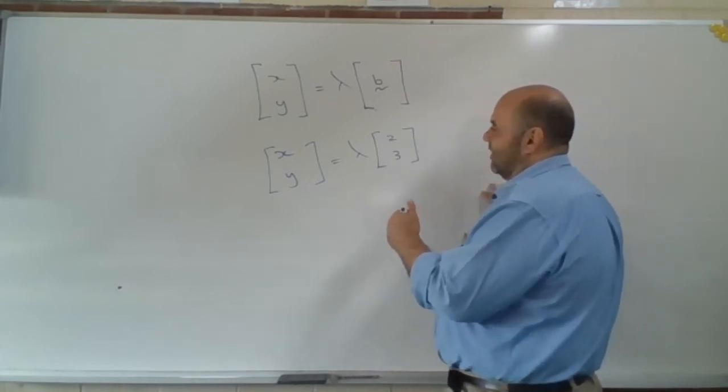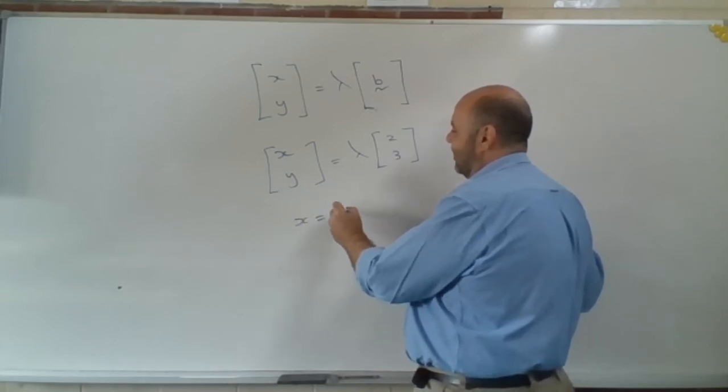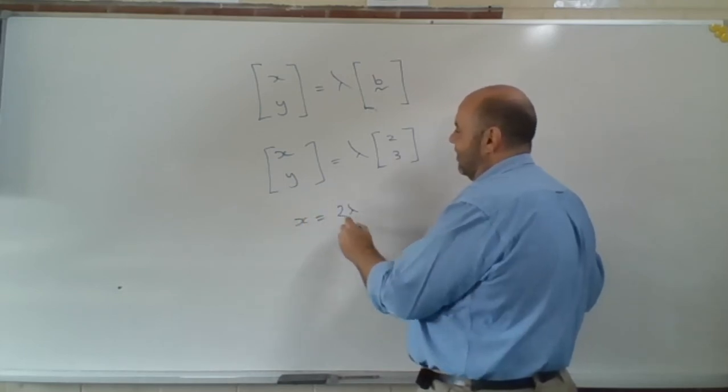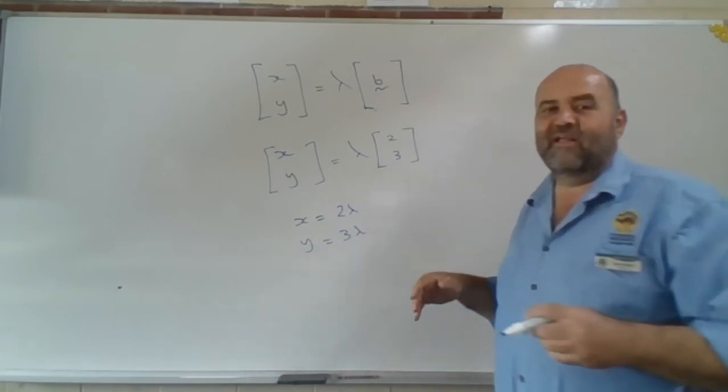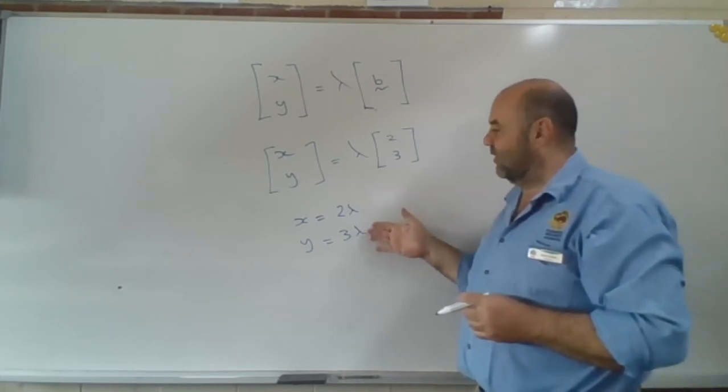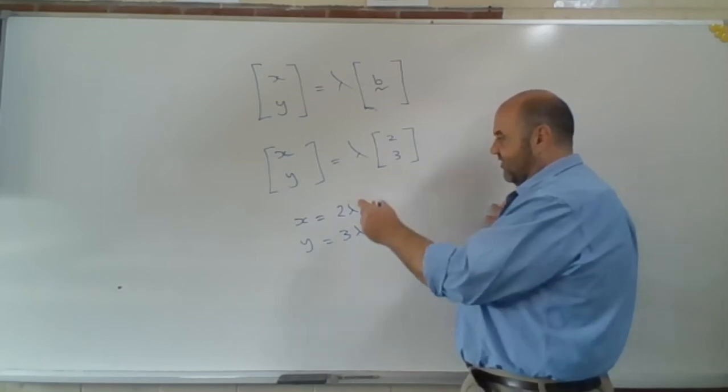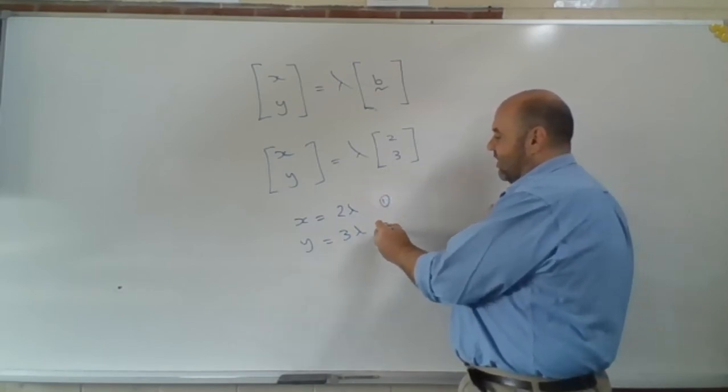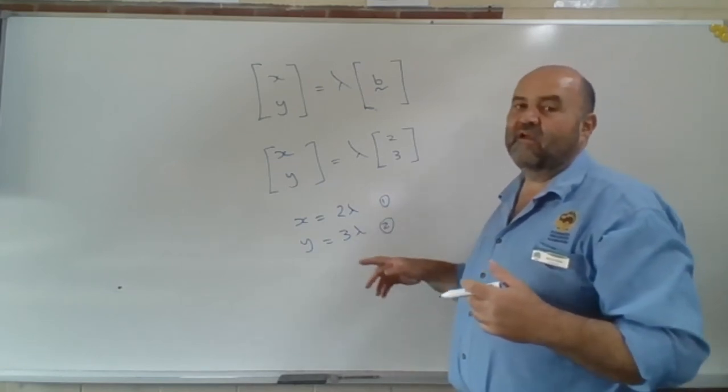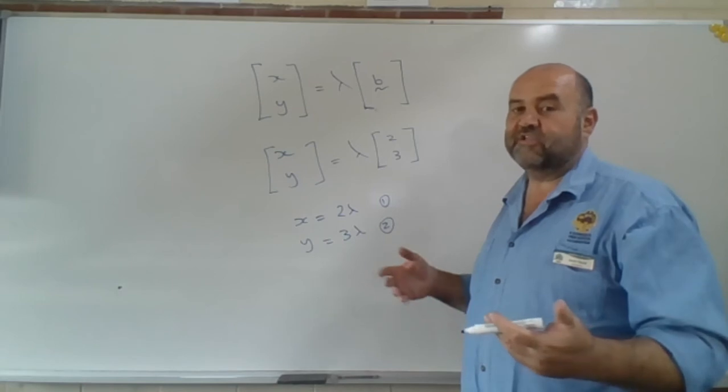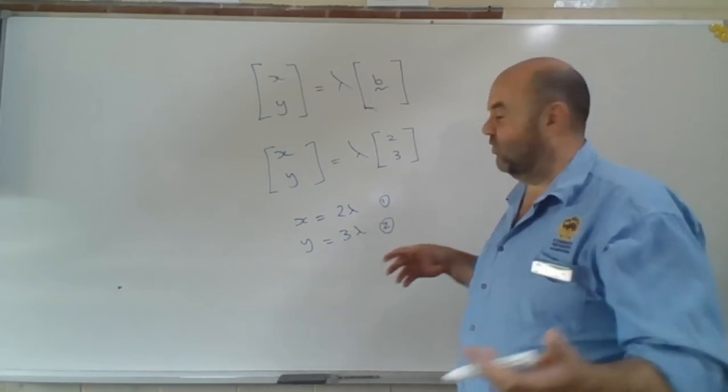So in 2D, what do we have here? Well, if I was to multiply this thing through, I'd have that x was equal to 2 times lambda and that y was equal to 3 times lambda. This gives me a set of parametric equations. So you would have seen your parametric equations in some of your extension 1 work. So if I eliminate my parameter lambda, I'm going to end up with the equation of the line that I had before.